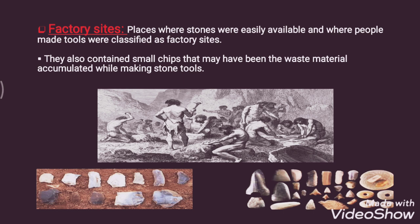Factory sites have large amounts of stones or tools that may have been discarded or left behind since they were not perfectly chiseled or sharp. They also contain small chips that may have been waste material accumulated while making stone tools. As seen in the picture, early humans tried to make different kinds of tools out of these stones.